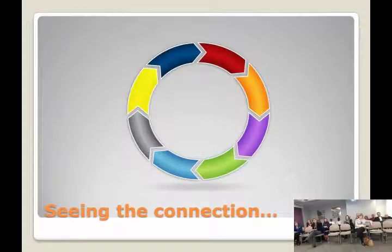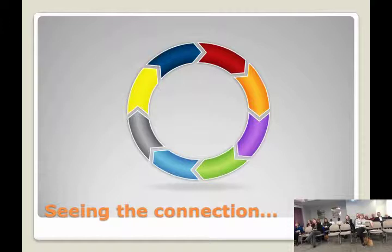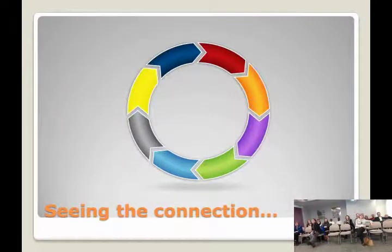Some of you are very familiar with the assessment cycle. It goes around and around where you start with your learning outcome, do your assessment, gather information, look at student learning, discuss it, and come to some conclusions about what's happening in your curriculum and classroom. You make some changes, and then it all starts over. You have to assess again. As soon as you've made an improvement, you begin assessing again. So you're never really finished.